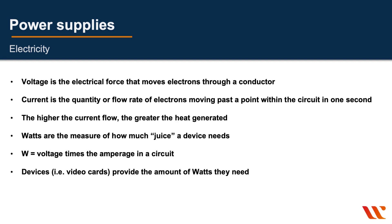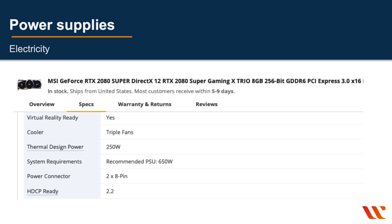When buying different devices and products, they will tell you how much power they need and how many watts they require. For example, a new video card — which usually requires a lot of power — will tell you how many watts it needs. You add up all the different components' wattage requirements to get the total amount of power required from a PSU. Let's look at an example: one of the newer and more expensive video cards, the GeForce RTX 2080.